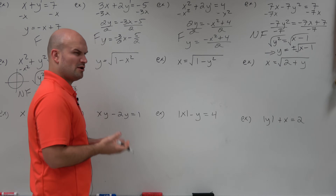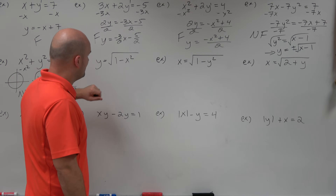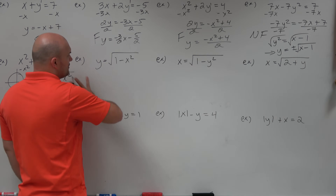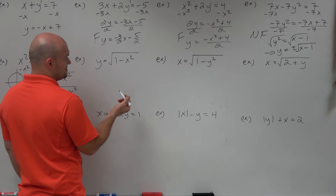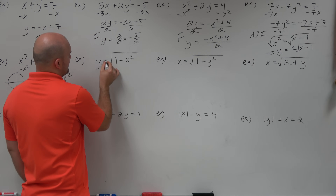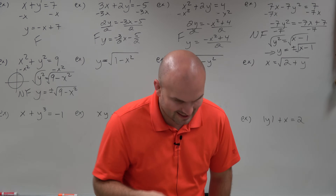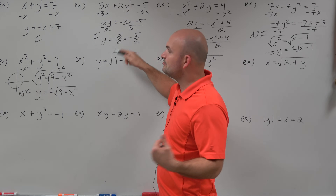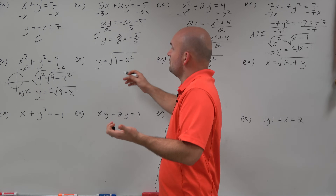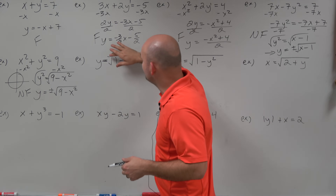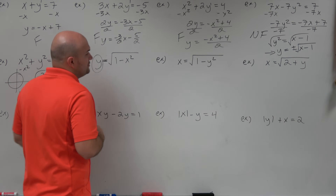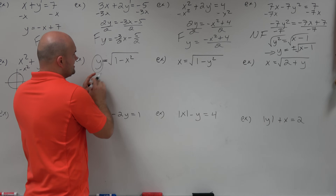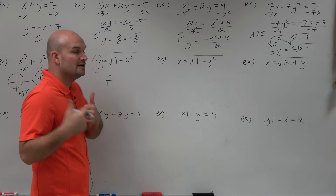Over here we see another square root. This is actually a very common equation we'll see quite a bit. Without graphing, let's just use our approach. The reason this is a function and others are not is because here we're just saying take the positive square root — we're not saying plus or minus. Either way, y is already provided uniquely. So as long as y is already isolated and there are no other y terms, we can say that is a function — it's already solved for y uniquely.